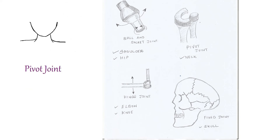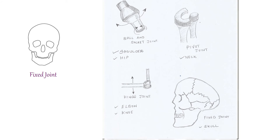The joint where our neck joins the head is called a pivotal joint. It allows us to bend our head forward and backward and turn our head to the right or left. Some joints are called fixed joints — in our skull, some bones are joined together and these bones cannot move at these joints. Such joints are called fixed joints.